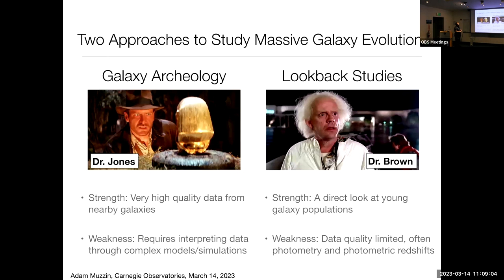Doing a lookback study is very complementary. The idea is we just look at galaxies in the distant universe at redshift 3, 4, 5, 6, or whatever, and see what galaxies like M87 look like. The challenge is that as we go to these high redshifts, the quality of your data is very limited. You often have to use mostly photometry rather than spectroscopy, and rely on these horrible things called photometric redshifts that I would advise you never to use unless you have to.